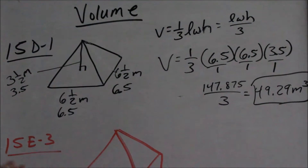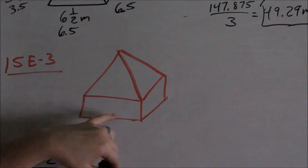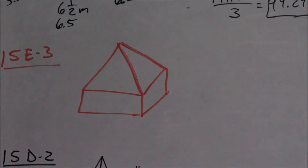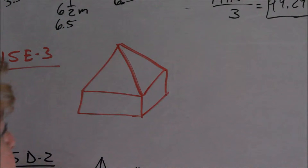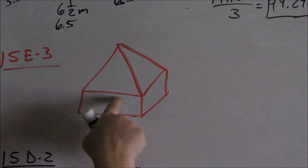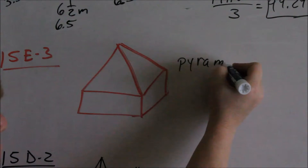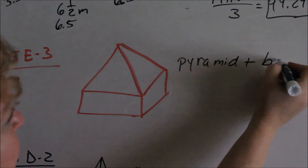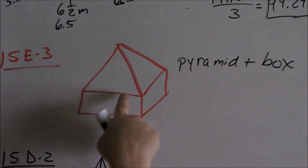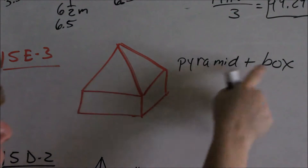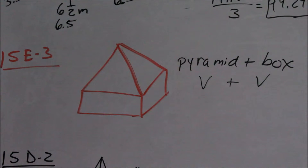That was 15D1. Looking at problem 15E3, you have a composite figure. To find the volume, remember volume is what fits on the inside, so you separate it into two different figures: a pyramid plus a box. Find the volume of the pyramid, then calculate the volume of the box, then add those two together for your total volume.